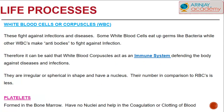White blood cells fight against infections and diseases. They eat up germs like bacteria, while some other WBCs make antibodies to fight against infection. White blood cells act as an immune system, defending the body against diseases and infections. They are irregular or spherical in shape, have a nucleus, and their number in comparison to RBCs is less.